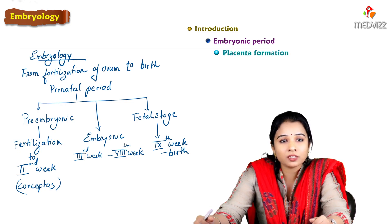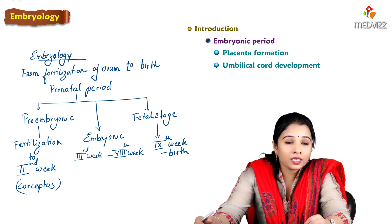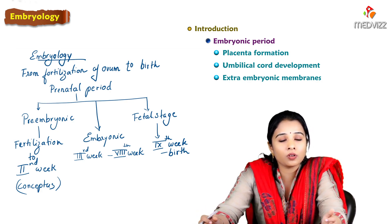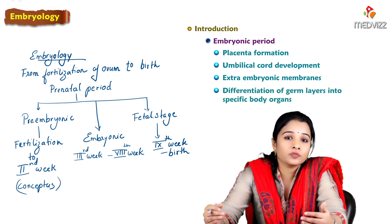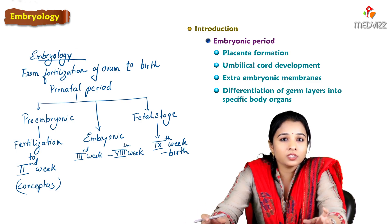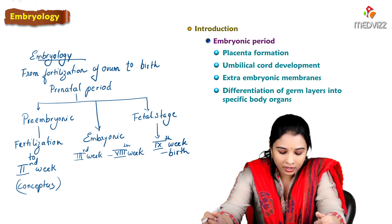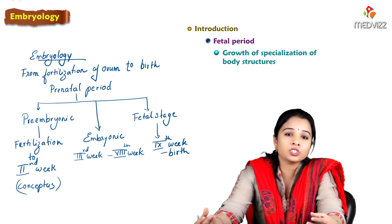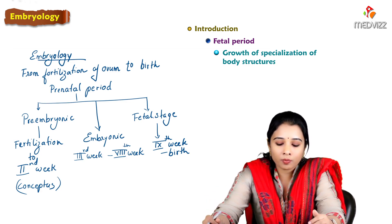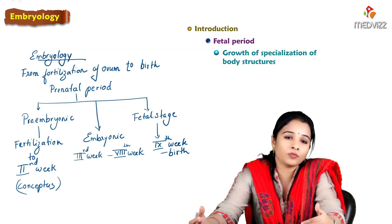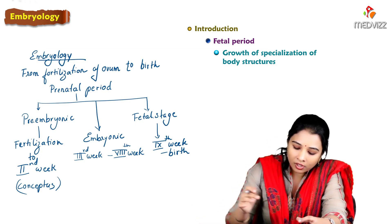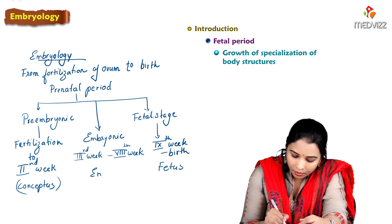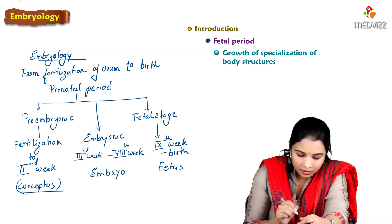During the embryonic period, we see the development of the placenta, umbilical cord, and extraembryonic membranes derived from extraembryonic mesoderm — chorion and amnion — as well as differentiation of germ layers into specific body organs. The fetal stage includes growth and specialization of body structures, increasing the weight of the developing baby. The conceptus is the term used during preembryonic stage, embryo during embryonic stage, and fetus during fetal stage.